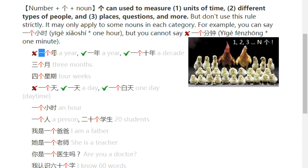Other examples: 三个月 (three months), 四个星期 (four weeks). You can say 一天 (one day, a day).